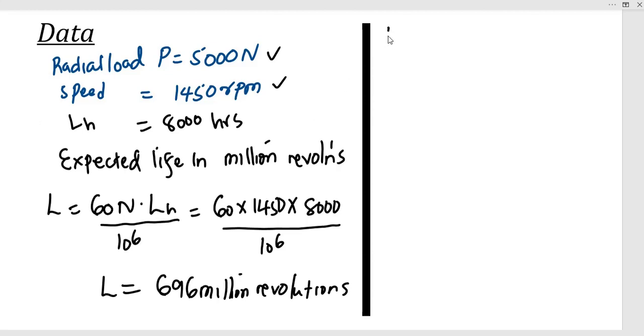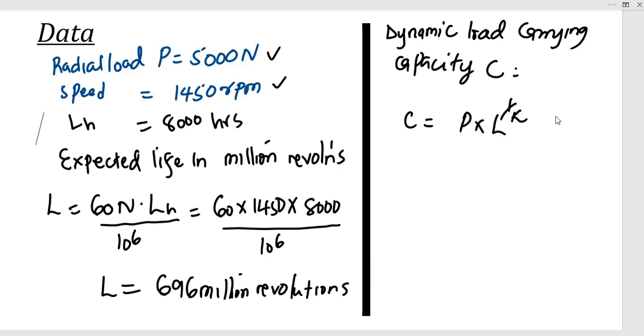So C is defined as P × L^(1/k), whereby k is a factor, a constant that depends on whether this is a roller bearing or ball bearing. So k = 3 for ball bearings and k = 10/3 for roller bearings.